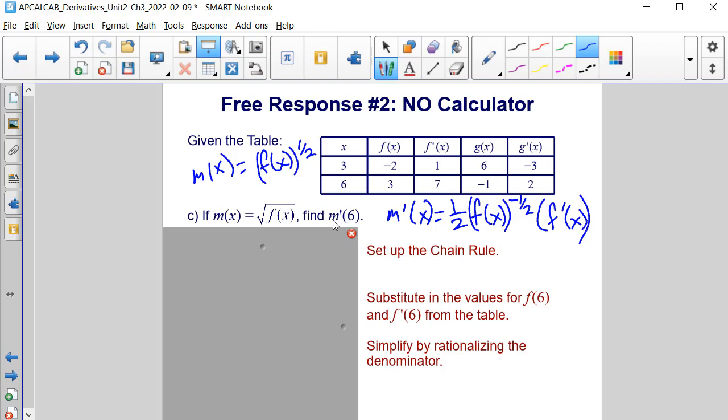And now, since we're finding m prime of 6, let's fill in 6 for our x's. So we have f prime of 6 divided by 2 times f of 6 raised to the 1 half power, or the square root of f of 6. And now we can substitute our values in based on what's in our table. This time, we are going to be using the row that has 6's in them.